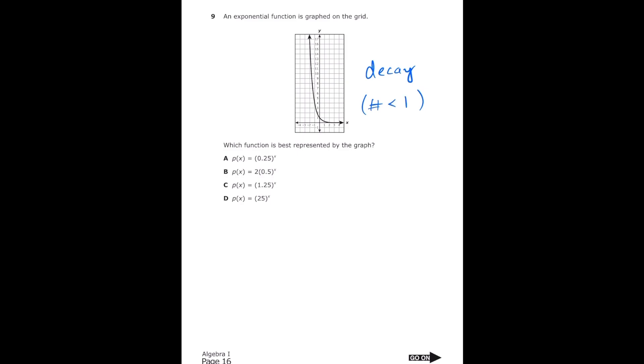So if I go through each answer choice, letter A has 0.25, which is less than 1. Letter B has 0.5, which again is less than 1. Letter C has 1.25, which is greater than 1, so I'm going to mark it out. And letter D has 25, which is obviously greater than 1, so I'm going to mark it out.